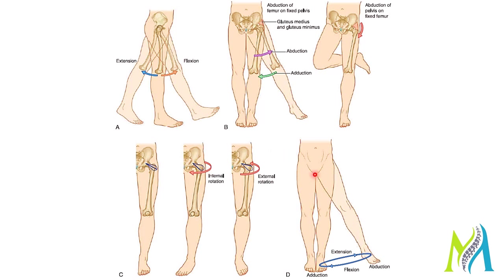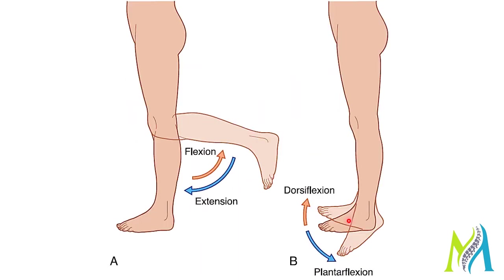The knee is simpler — it functions as a hinge joint with flexion and extension. Extension occurs when you are standing straight, and flexion when you bend the knee. At the ankle, there are two important movements: dorsiflexion, when the dorsum of the foot moves upward, and plantar flexion, when the sole of the foot points downward and backward.